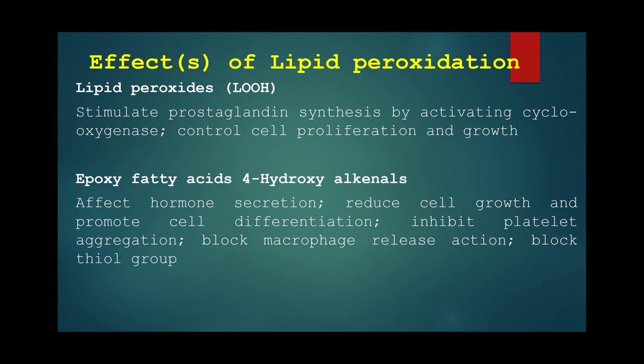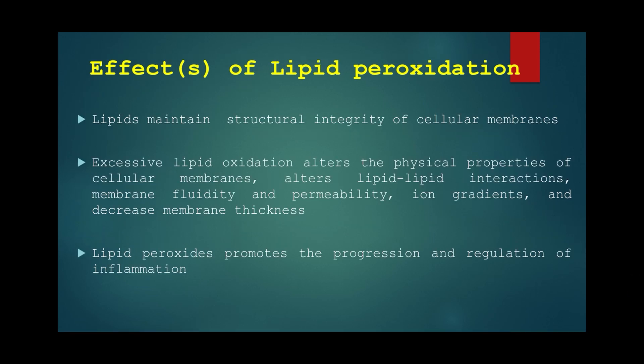Lipid peroxidation products block macrophage release, change membrane permeability of macrophages, and block thiol groups. Since lipids maintain the structural integrity of the cell membrane as important components alongside proteins and carbohydrates, excessive lipid oxidation alters the physical properties of the cell membrane by altering lipid-lipid interactions, membrane fluidity and permeability, ion gradients, and decreasing membrane thickness.